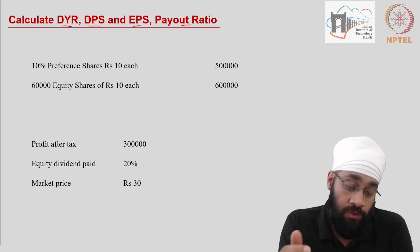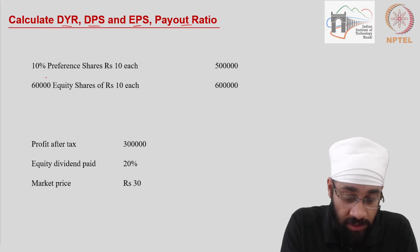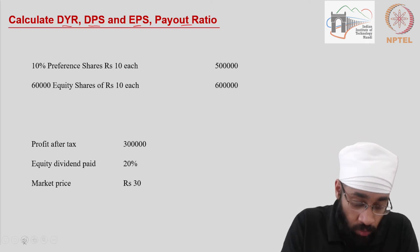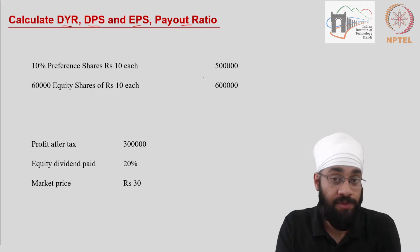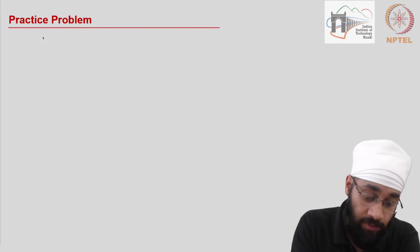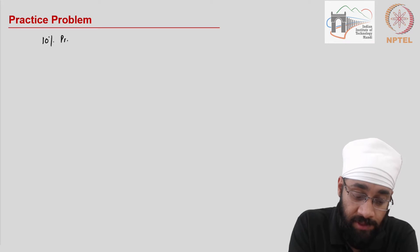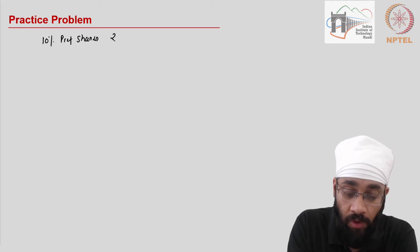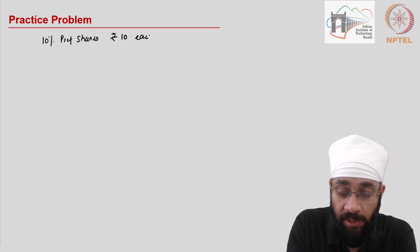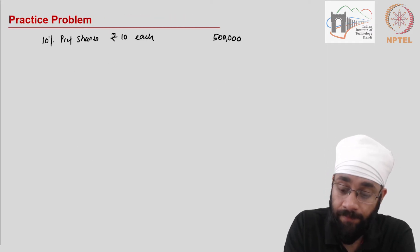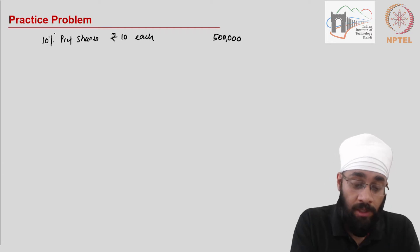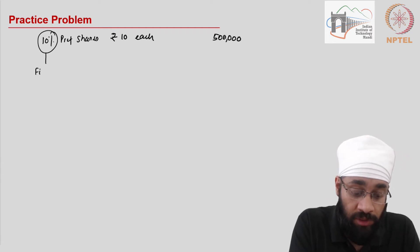The first item given on the slide is 10% preference shares of rupees 10 each, with an amount of 5 lakhs. The 10% here refers to the fixed dividend that preference shares are eligible for.